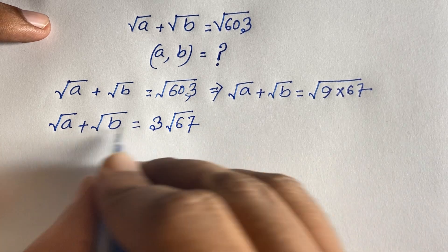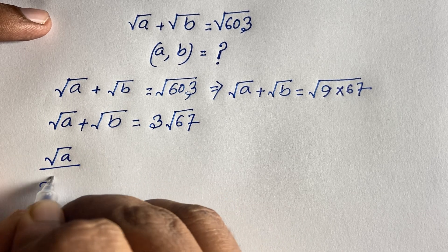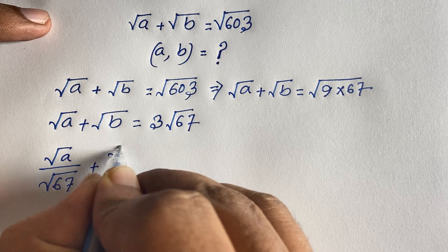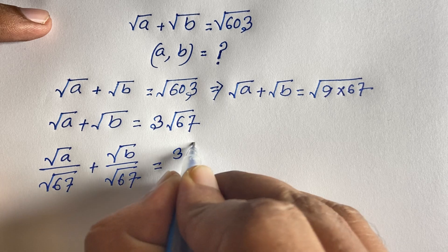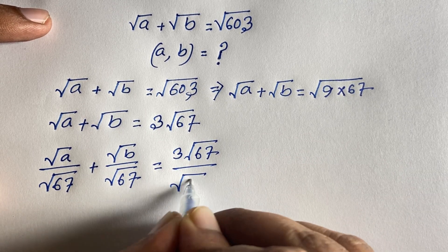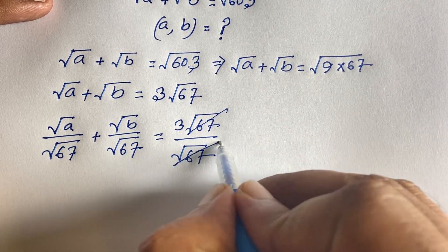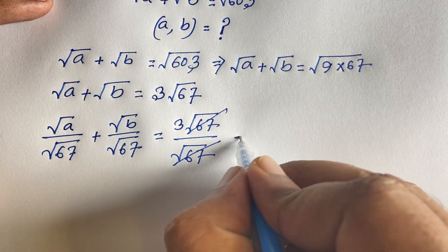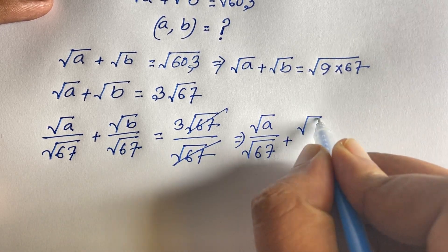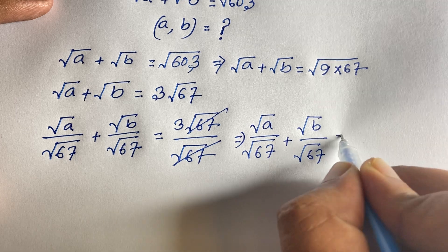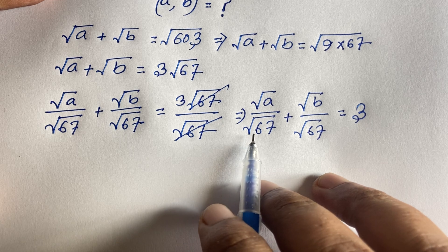Now I divide both sides by √67. So this expression becomes: √a / √67 + √b / √67 = 3√67 / √67, which simplifies to √(a/67) + √(b/67) = 3.